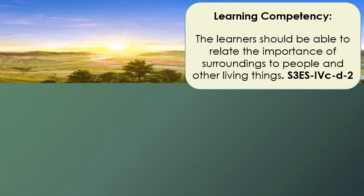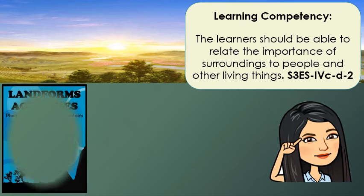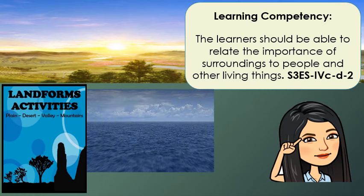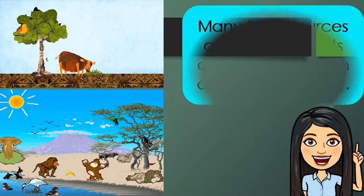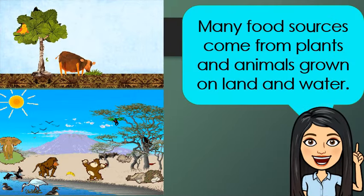Learning competency with code: the learners should be able to relate the importance of surroundings to people and other living things. Many food sources come from plants and animals grown on land and water. For today, we are going to study the uses of water and landforms, and we will also tackle the various ways on how we will take care of our Mother Earth.